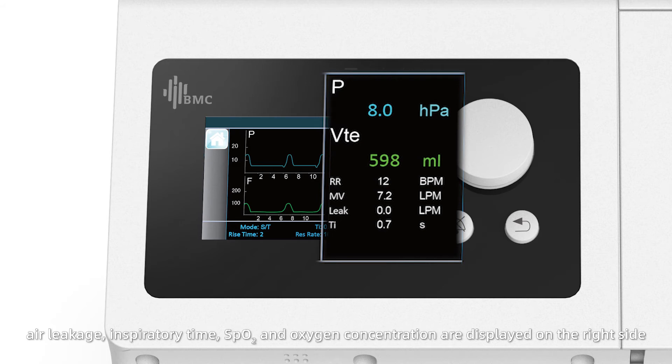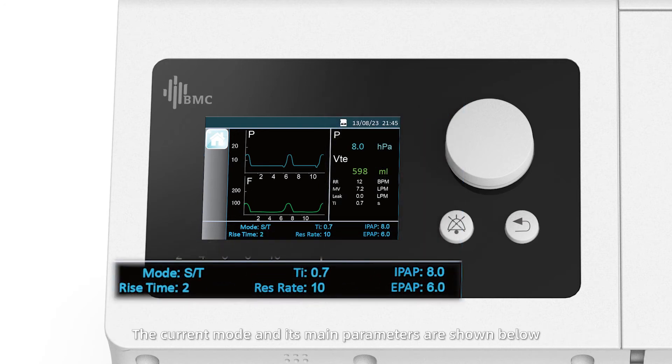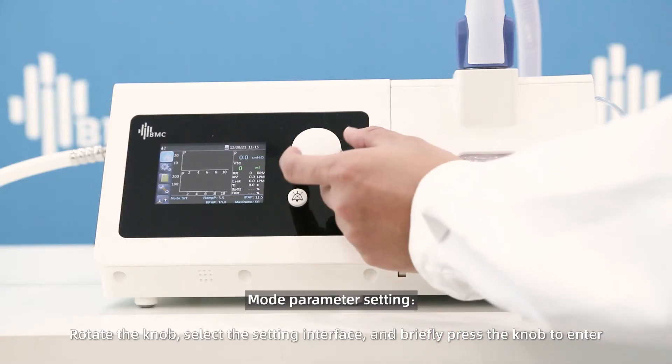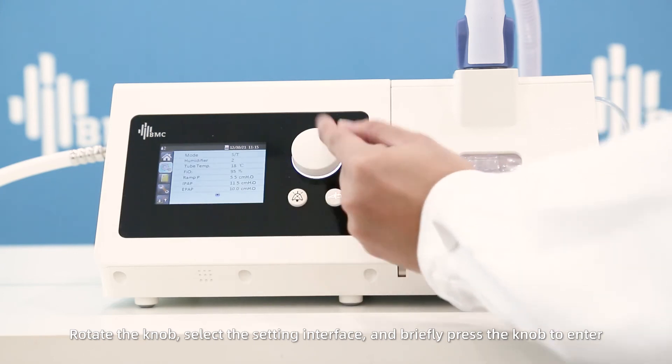Inspiratory time, SpO2, and oxygen concentration are displayed on the right side. The current mode and its main parameters are shown below. Rotate the knob to select the setting interface and briefly press the knob to enter.